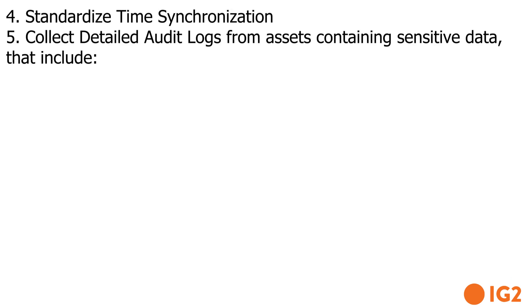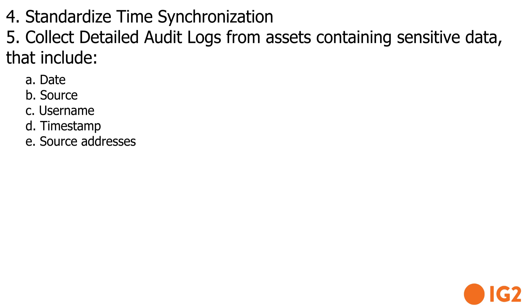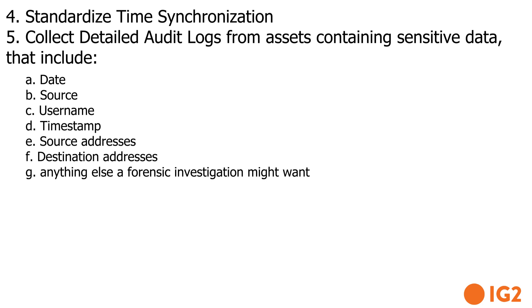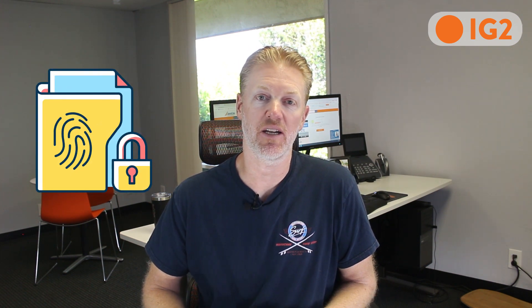Step five: identify assets that have sensitive data and make sure you are collecting specific information on your audit logs from those assets. That includes A) the date, B) the source, C) the username, D) the timestamp, E) source addresses, F) destination addresses, and G) anything else useful in a forensic assessment — any additional information available in the logs on those sensitive assets that could help if an incident occurs.